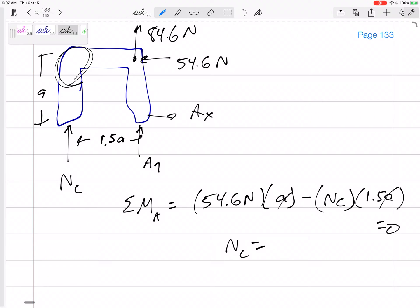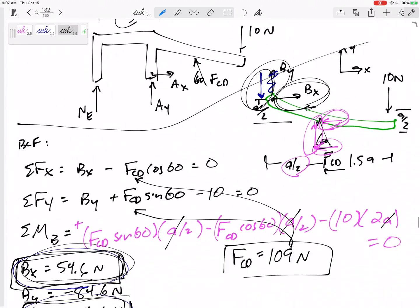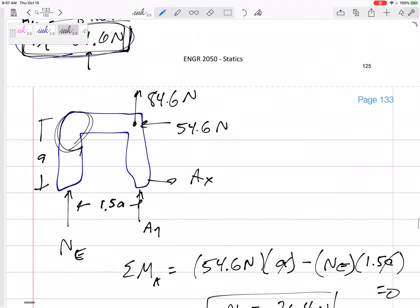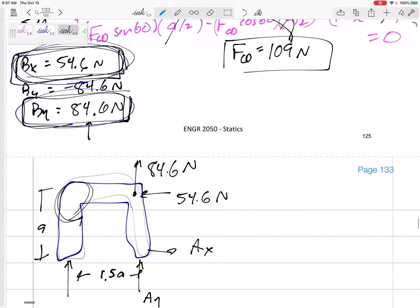NE would be, and I'm calling it C. I think it's E. Sorry. The normal force at E, 36.4 Newtons. Normal force at E, 36.4 Newtons. So pushing down on that handle, only 10 Newtons gives it a clamping force of 36.4 Newtons, and we got that by looking at the free body diagram of the handle, and then the free body diagram of this other member right here.